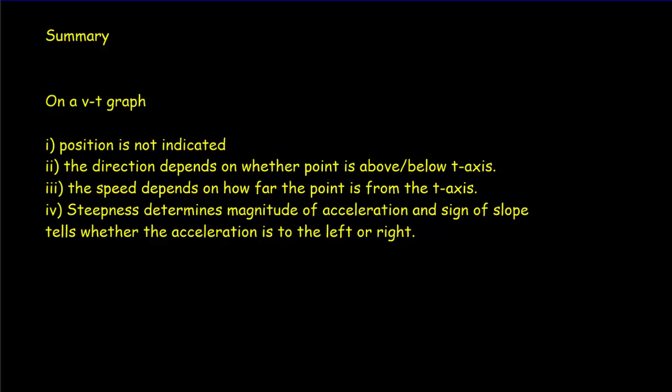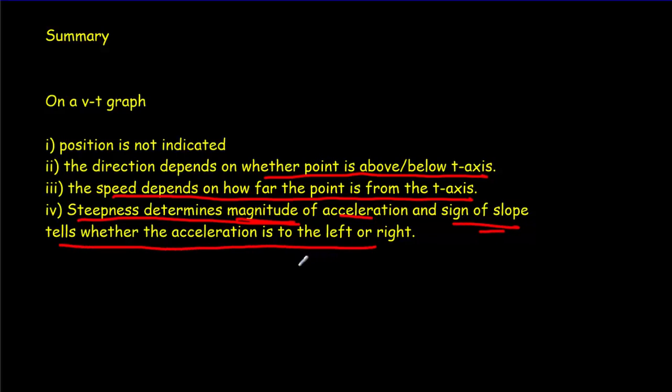Okay, so let's summarize the results on a VT graph. First thing is, position is never indicated. You never know the position. You know changes in position, but not position itself. The direction depends on whether the point is above or below the time axis. The speed depends on how far the point is from the time axis. And then, the steepness determines the magnitude, the size of the acceleration, whereas the sign of the slope tells us whether the acceleration is to the left or to the right. And that's all for today, folks. Thank you very much.